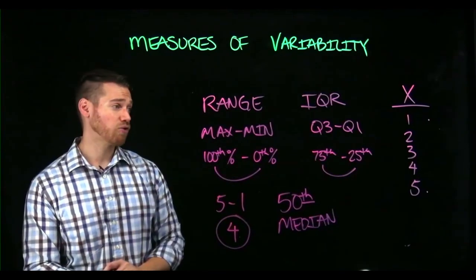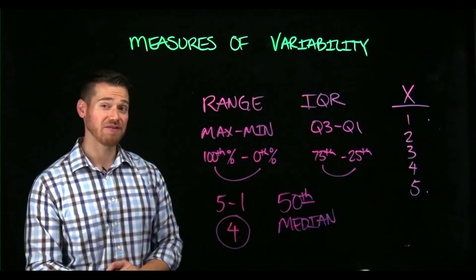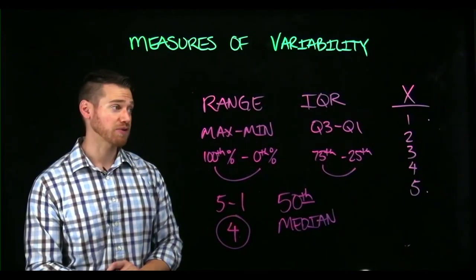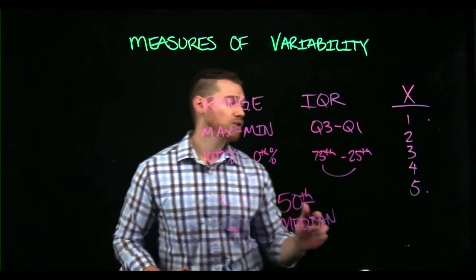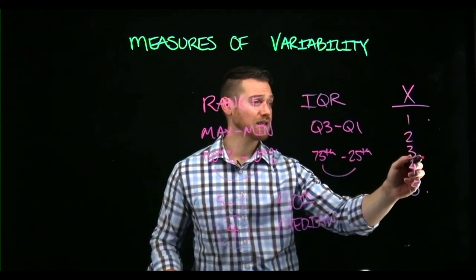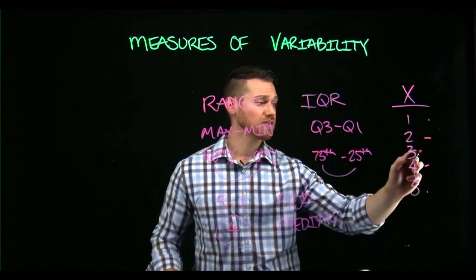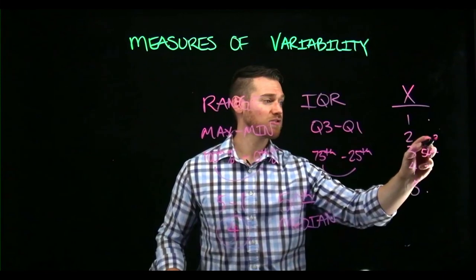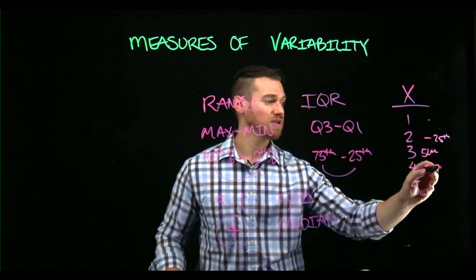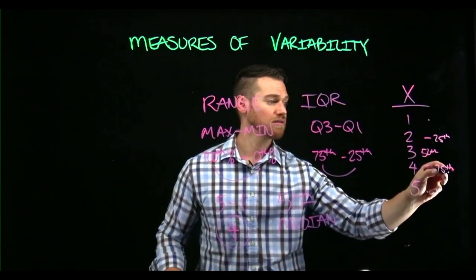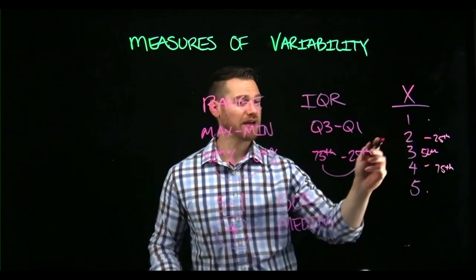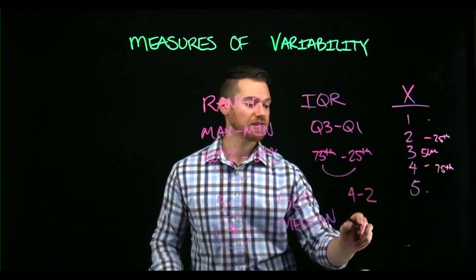To find the interquartile range, we want to find the value at the 25th and 75th percentile. This is the top and this is the bottom and this is the middle, and here are our quartiles. This is the 50th, this would be the 25th, this would be the 75th. We simply take our four minus two and get two.